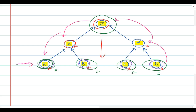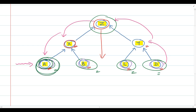For example, manager A doesn't need to go and get authorization for each individual expense included in the master budget, because the master budget has already been approved by top management. This manager can go ahead and incur any of the costs that have been approved within that budget.